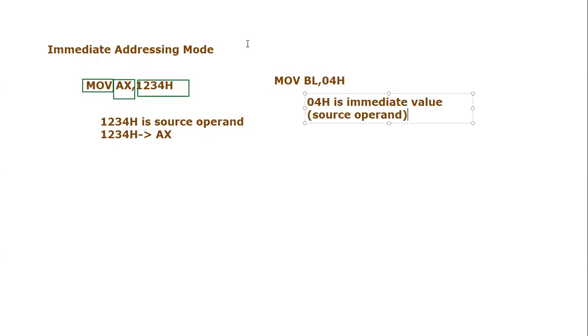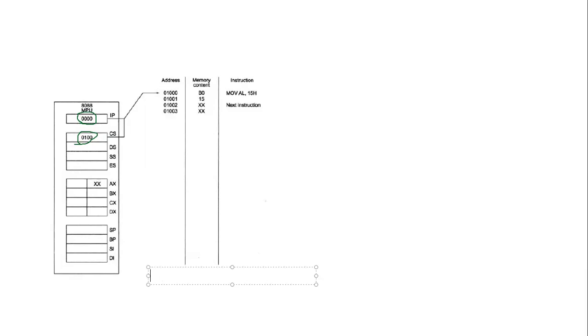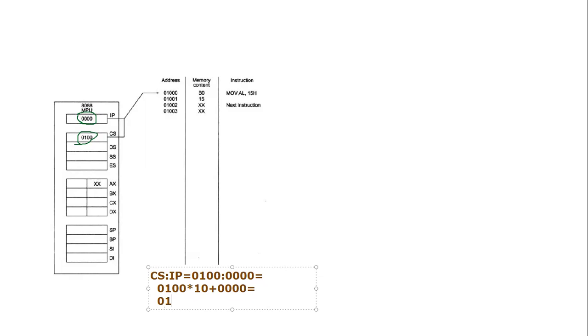I hope everyone has understood the concept. Let's take an example in a software model to show some examples of immediate addressing mode. In this example we are considering a software model. We can see that the IP value is 0000h and CS is 0100h. We know that CS:IP provides the physical address. The CS value is 0100h and the logical IP value is 0000h. This diagram represents physical memory.